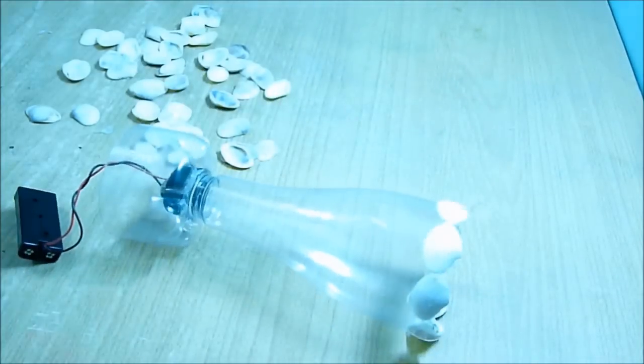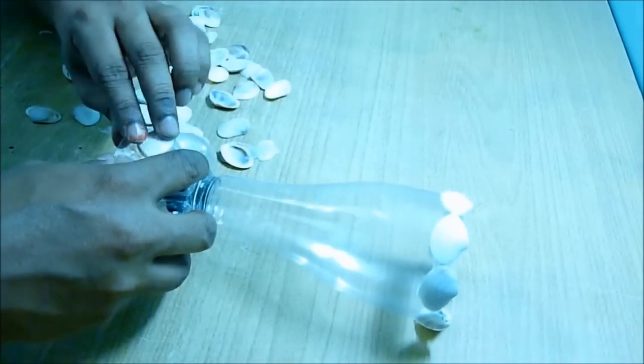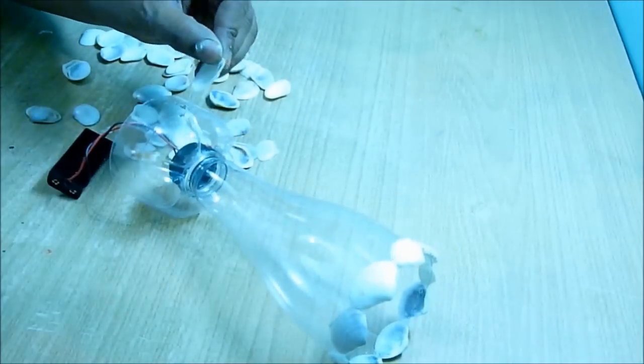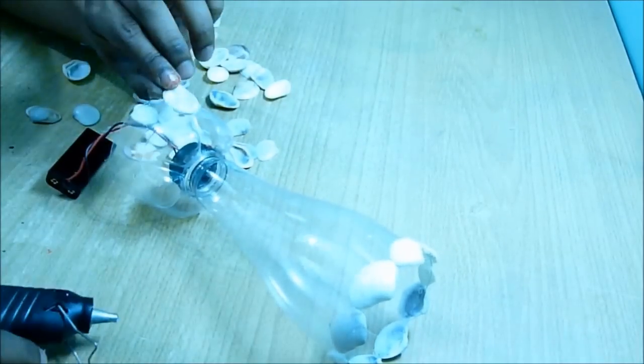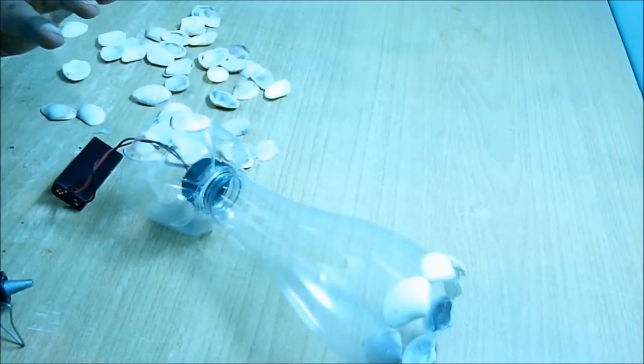Then to hide the bottom part, which is the batteries and all those things hidden inside the base, we are going to put another row of seashells around the base.